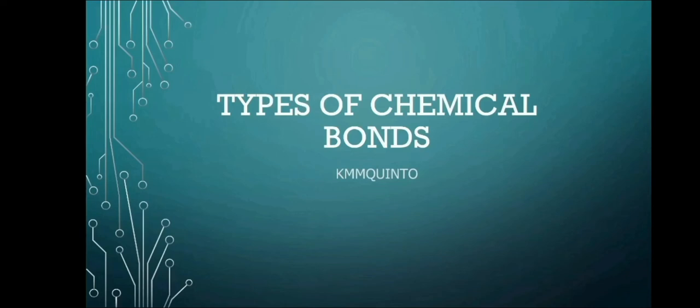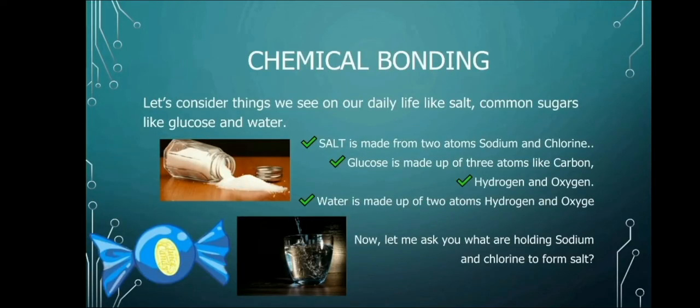Hello, good afternoon guys. Today we will be talking about types of chemical bonds. So first let us know what is a chemical bonding. Let's consider things we see on our daily life like salt, common sugars like glucose and water.